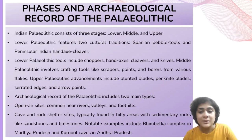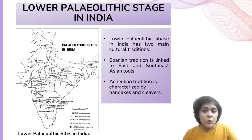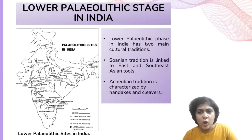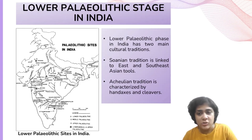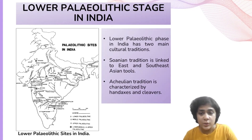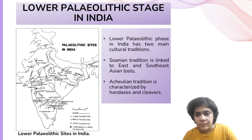Notable examples of cave or rock shelter sites include the Bhimbetka complex in Madhya Pradesh and the Kurnool caves in Andhra Pradesh. The Lower Paleolithic phase in India is characterized by two traditions: the Sohanian tradition, which is part of the East and Southeast Asian chopper-chopping tool traditions, and the hand axe-cleaver or biface assemblages representing the Acheulian tradition. This tradition is well-documented in the western regions of the Old World, including Africa, western Europe, west and south Asia.